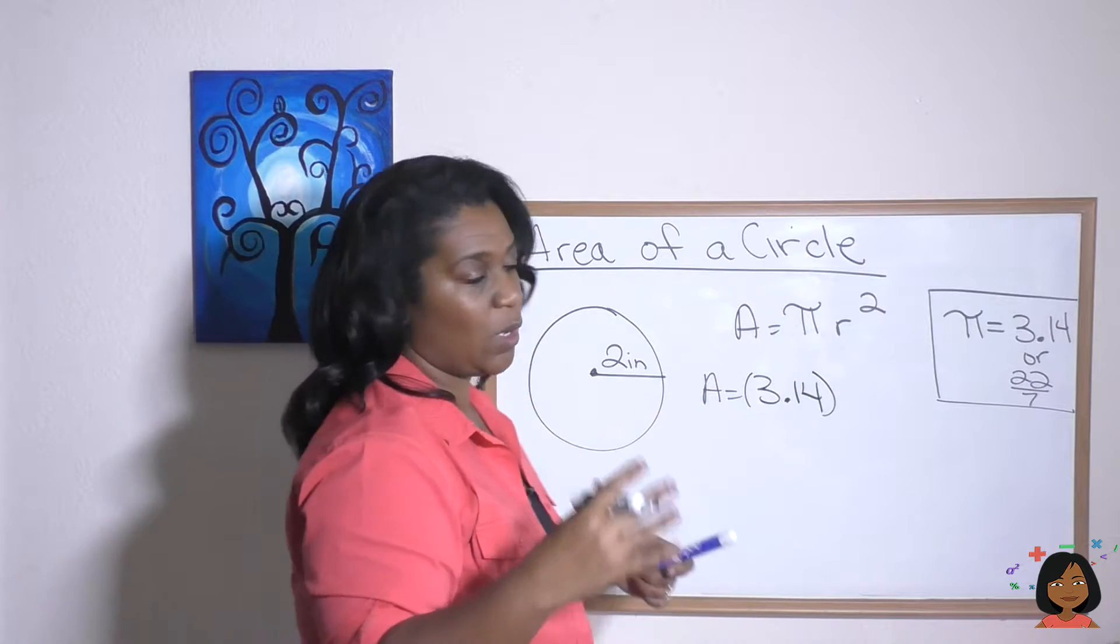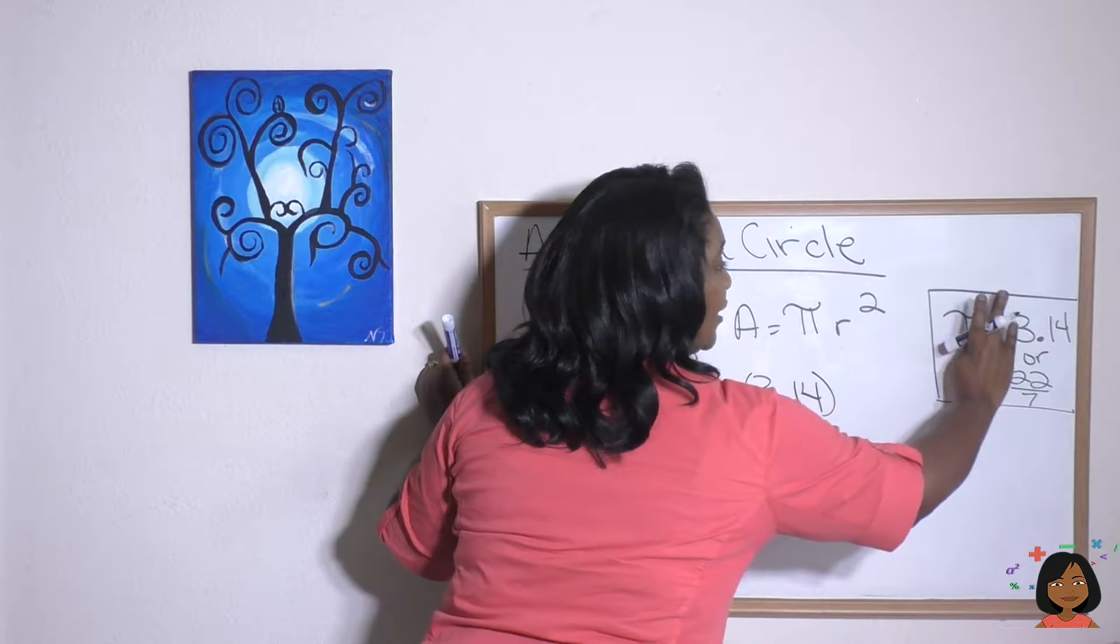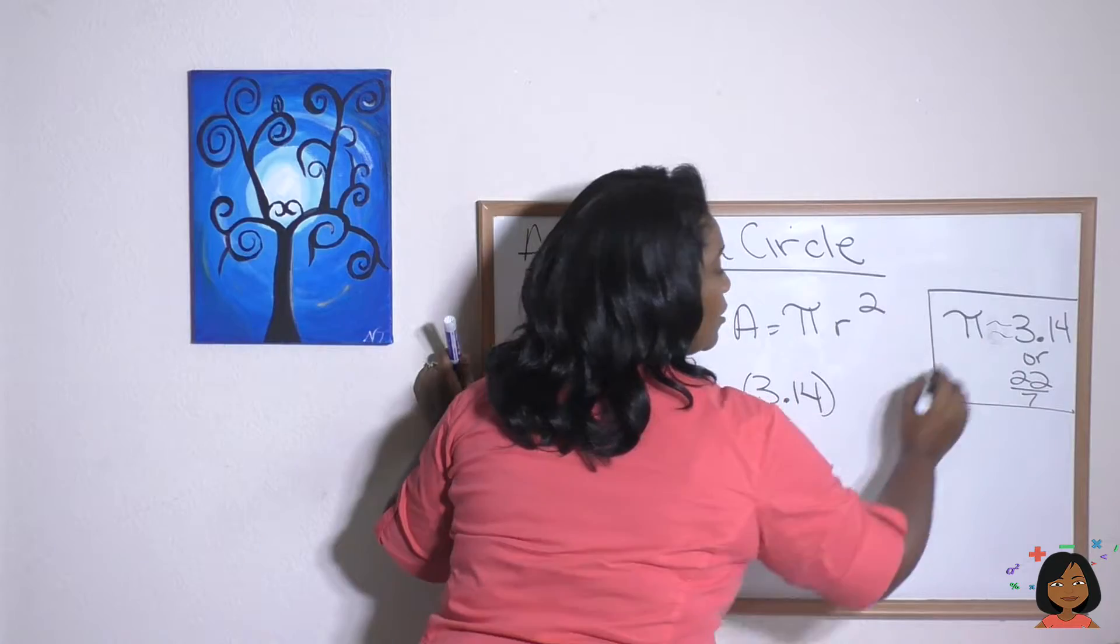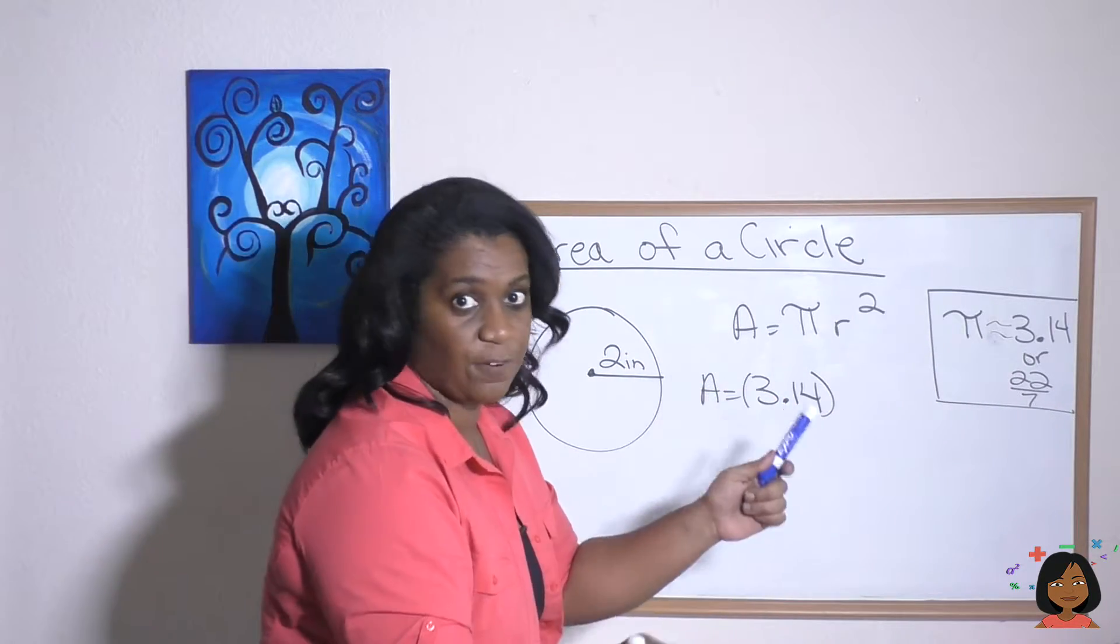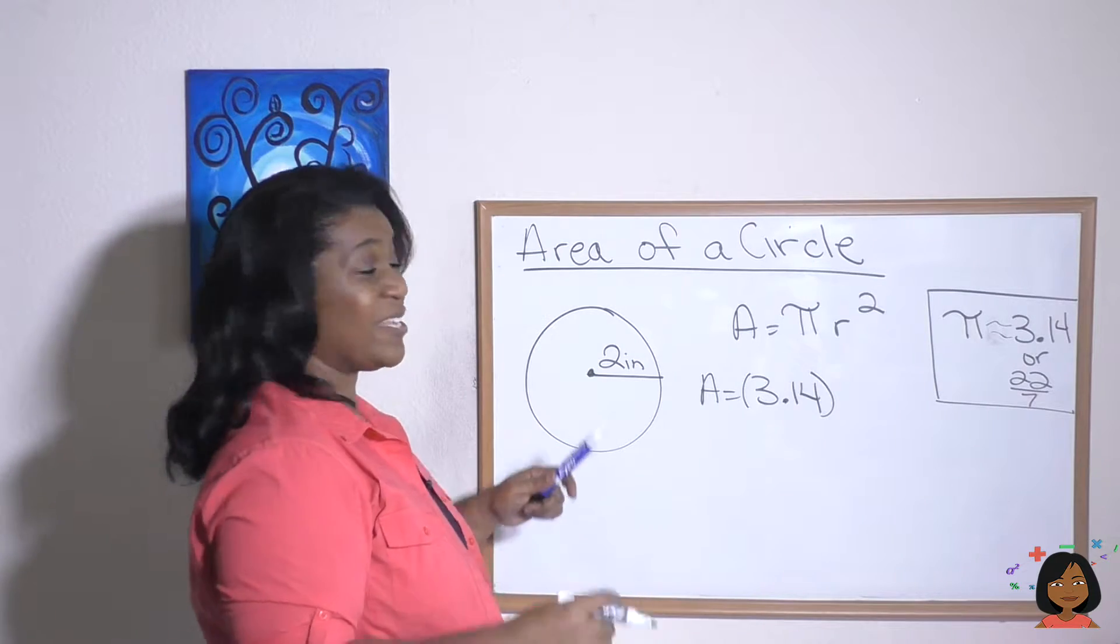And actually, even though I wrote equal, I should say the squiggly lines, which is the approximation of pi. Because it's 3.14 and it goes on forever. So 3.14 is the approximation.